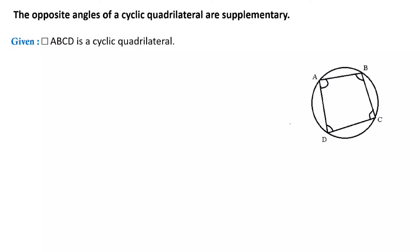What we have to prove is that the opposite angles are supplementary. Angle A means angle BAD, and the angle opposite to it is angle C, that is angle BCD. This is one pair of opposite angles. Angle B and angle D is the next pair of opposite angles of this cyclic quadrilateral.